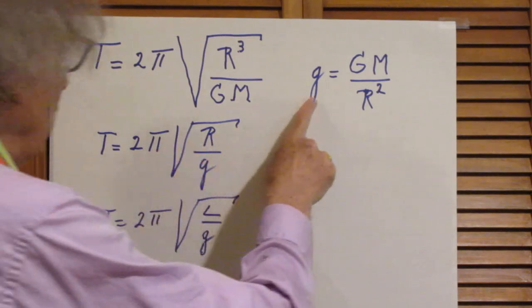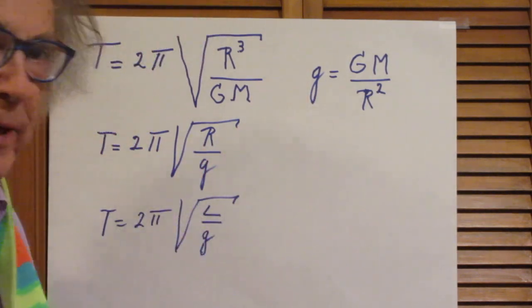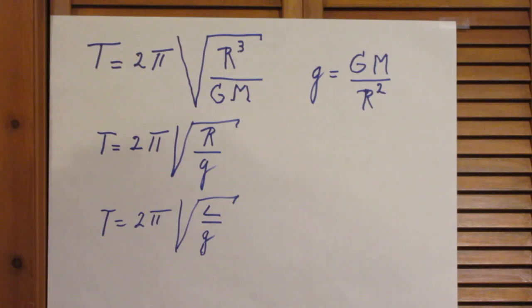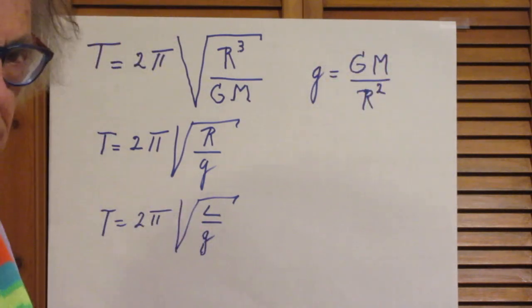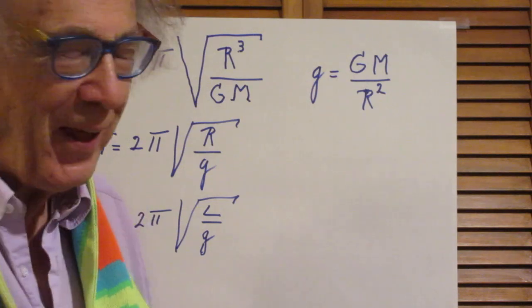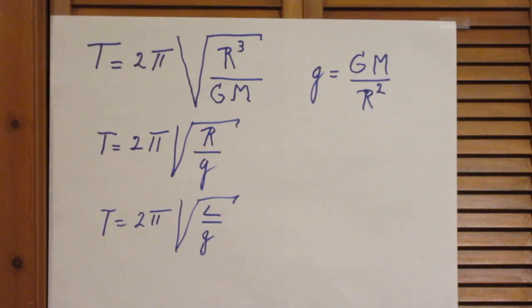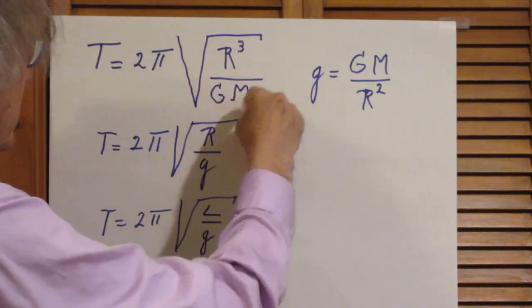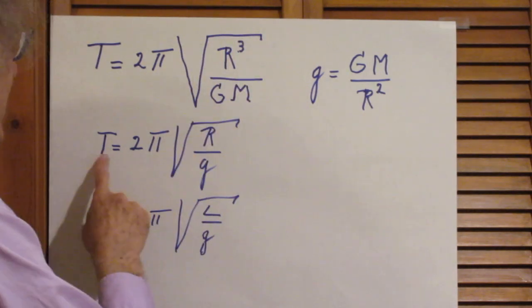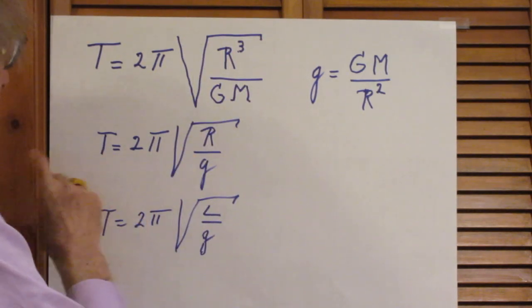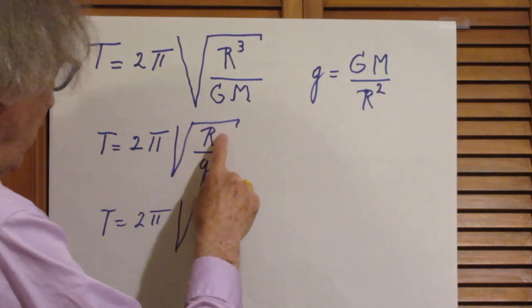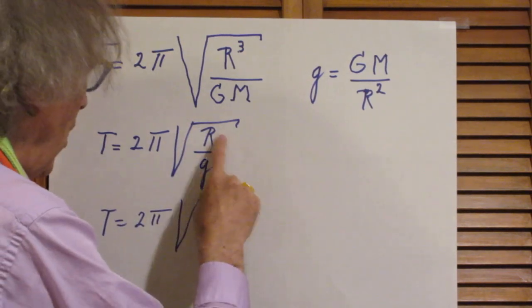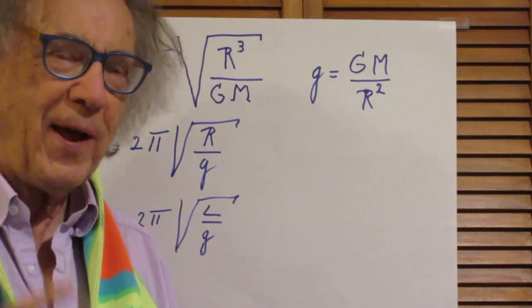Now little g, which is 9.8 meters per second squared, is also GM/R². I assume most of you know that. So therefore we can rewrite this as the period for one complete oscillation through the tunnel is T = 2π√(R/g). This R is now the radius of the earth, and g is the 9.8 meters per second squared.